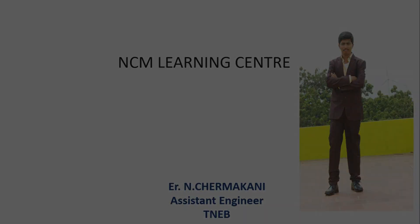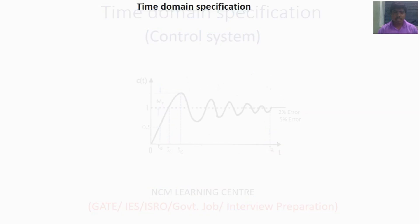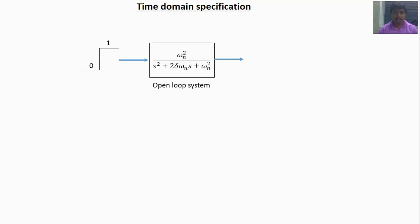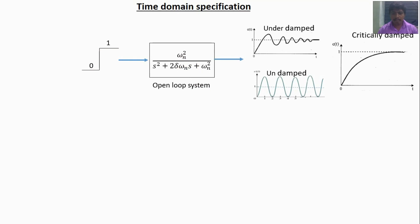Good morning friends. I am going to explain the time domain specification of second-order systems. The standard transfer function of a second-order system is ωn² divided by s² plus 2ζωn·s plus ωn². This is the standard second-order system in open configuration. When I give a step input — changing from 0 to 1 — the output may be underdamped, undamped, critically damped, or overdamped.